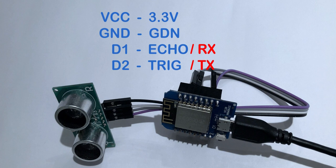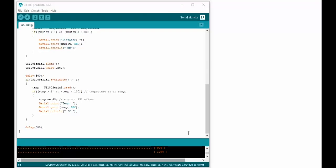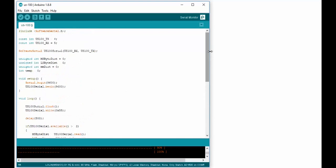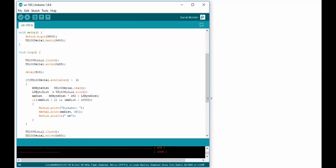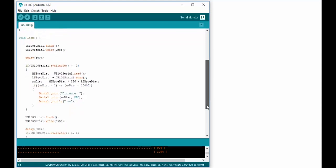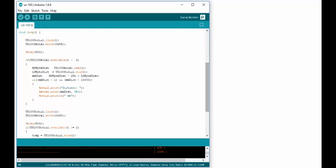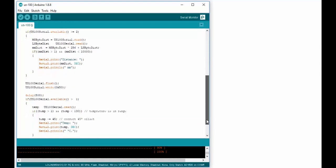The link to this code is also in the description. By sending the byte 0x55, we ask the US100 for the distance. We have to read the first byte and multiply it with 256 and then add the second byte. If you only want to read the temperature, we send the byte 0x50 and we read the data back and adjust it with 45 to get the temperature in celsius.